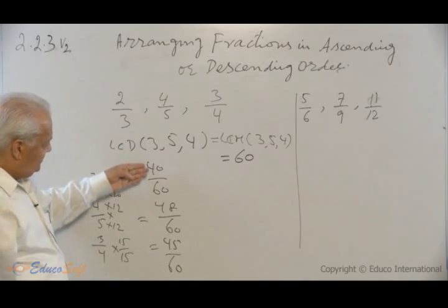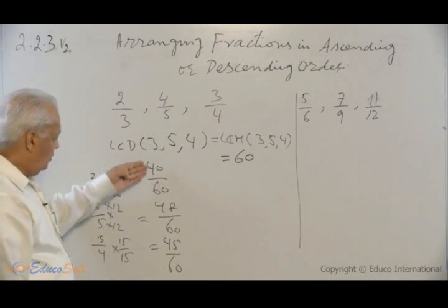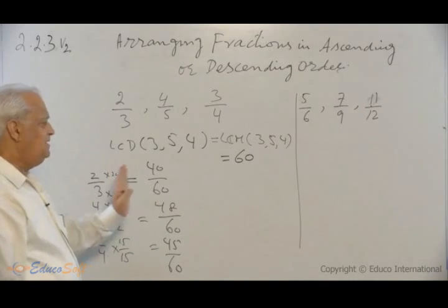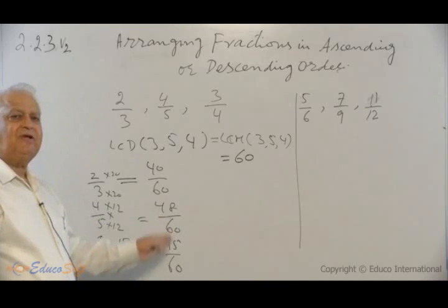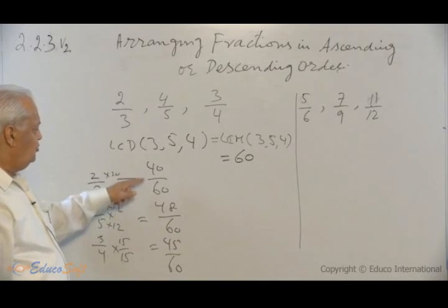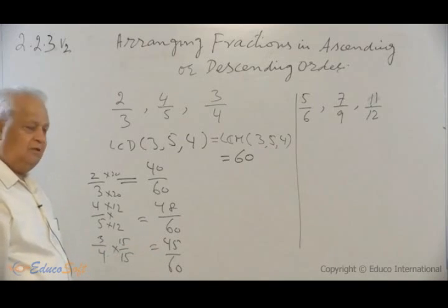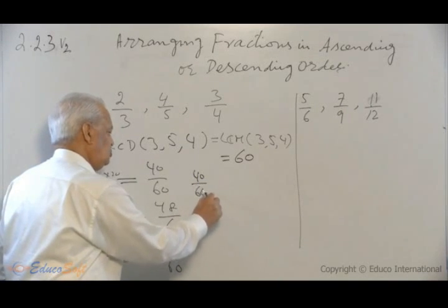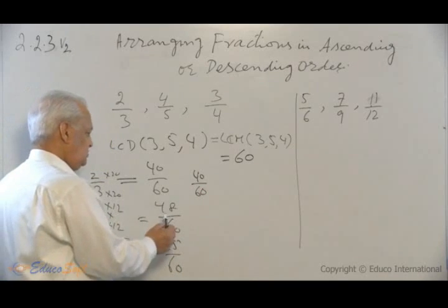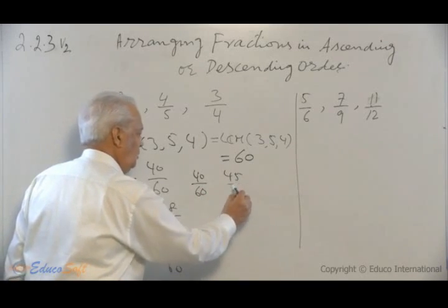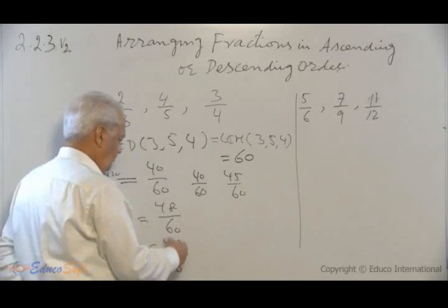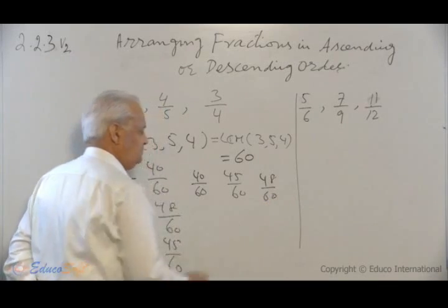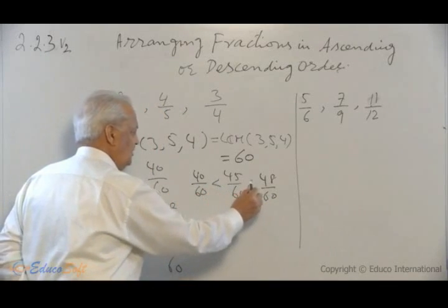So in order to arrange these fractions now, with all three fractions now with the common denominator 60, you have to arrange them in ascending order. That means the smallest one. Which is the smallest numerator? 40, 48, 45. 40 is the smallest. So 40 over 60 is the smallest fraction. Next, 45 over 60 is the next larger. And lastly, the largest of these is 48 over 60. This is smaller than this, this is smaller than this.